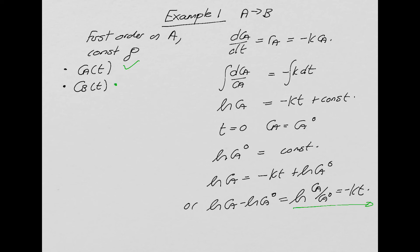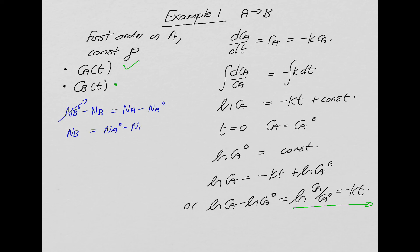Now let's look at how the concentration of B changes with time. From the mole balance, the number of moles of B we start with minus what we have at some point must equal NA minus NA0. Assuming we don't start off with any moles of B, NB = NA0 − NA. Dividing by volume gives CB = CA0 − CA.